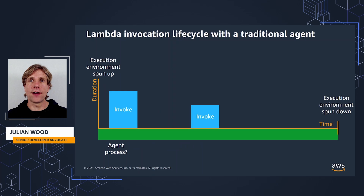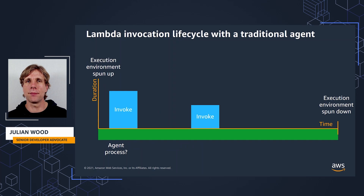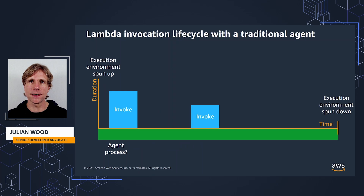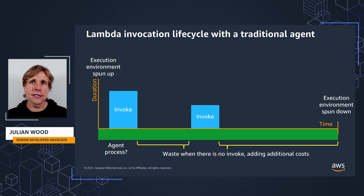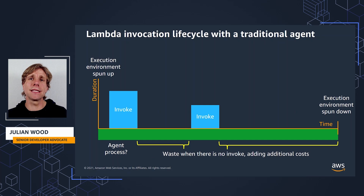Lambda invokes your function in an execution environment, which provides a secure and isolated runtime environment and manages the resources required to run your function. If we had to have the same kind of model for Lambda, which has short-lived compute where you don't pay for idle, this would be wasteful. Maintaining a long-running agent process with intermittent invokes would cost more unnecessarily.